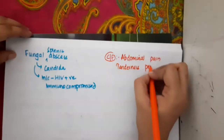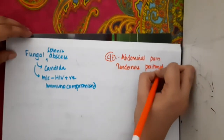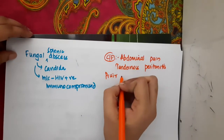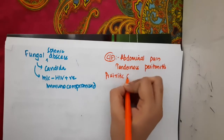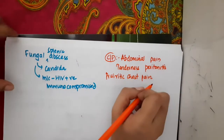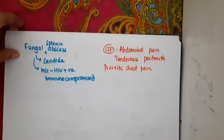The clinical features of splenic abscess include presence of abdominal pain, tenderness with peritonitis, and pleuritic chest pain. These are the main clinical features of splenic abscess.